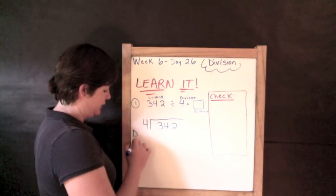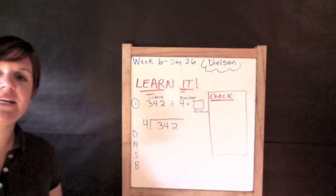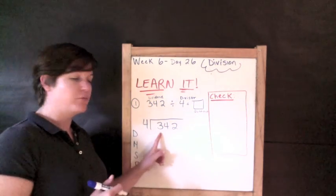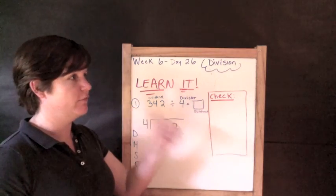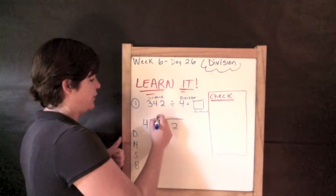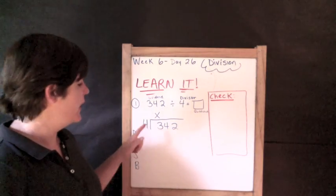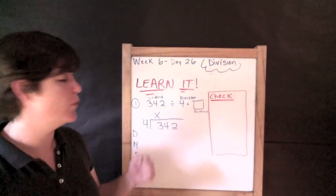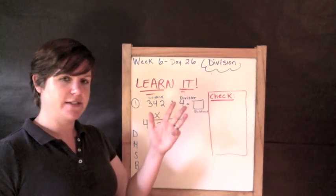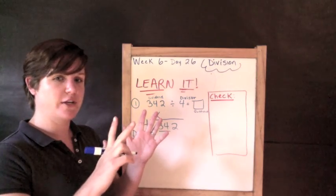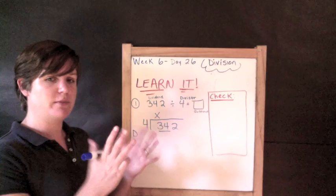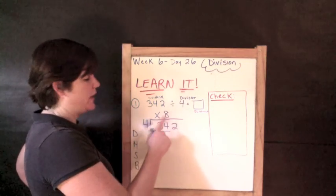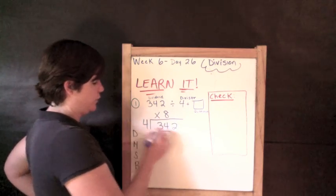First step: divide, multiply, subtract, bring down — repeat until we've finished all digits in the dividend. How many fours go into 3? One four is already 4, which is more than 3, so zero. How many fours go into 34? Counting by fours: 4, 8, 12, 16, 20, 24, 28, 32, 36 — 36 is too many, so we need 32, which is 8 times 4. So 34 divided by 4 is about 8. Multiply: 8 times 4 is 32.